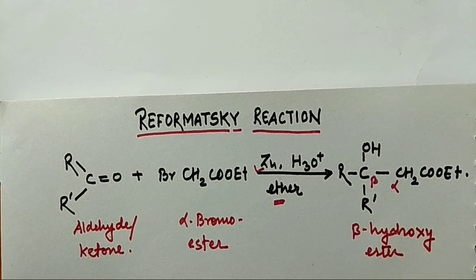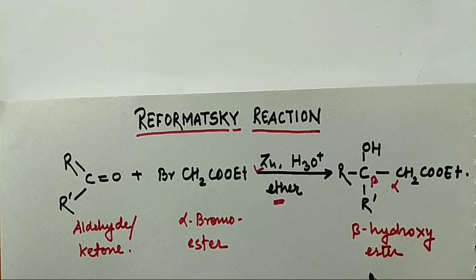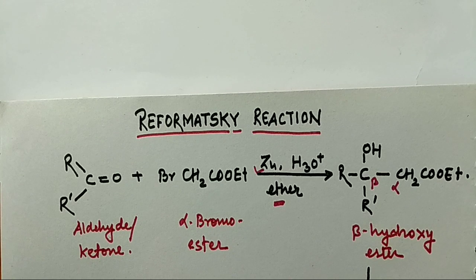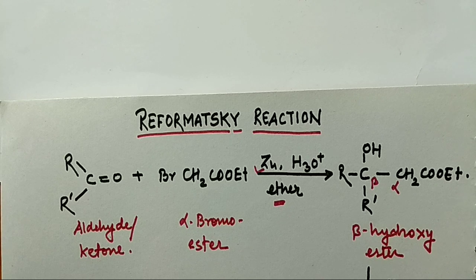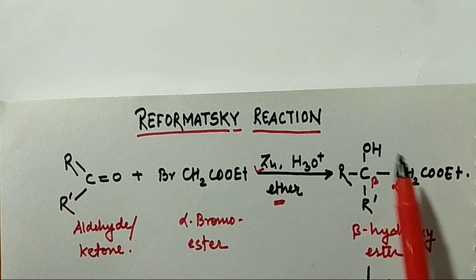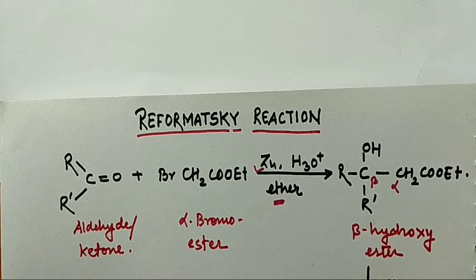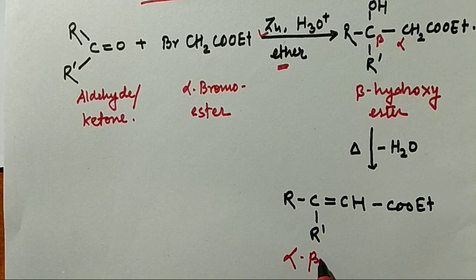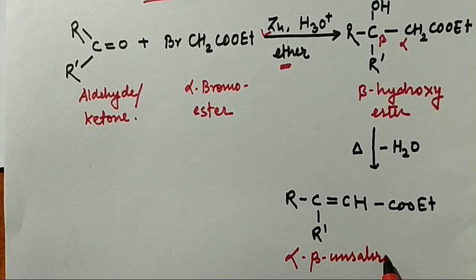When this beta-hydroxyester is further heated, it undergoes dehydration to give an alpha-beta unsaturated ester. The hydrogen from one carbon and the OH from the adjacent carbon undergo elimination of water, and a double bond is formed. This product is the alpha-beta unsaturated ester.